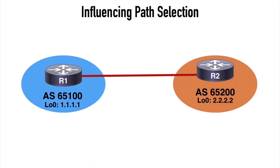There are some special cases where we may need to override certain BGP default behaviors, and we're going to look at some of the ways that we can do that. In this first topology we're using a couple of routers: R1 in Autonomous System 65100 and R2 in Autonomous System 65200. They're connected over a 10.1.1.0/24 network and advertising their respective loopback addresses — loopback 1.1.1.1 for router 1 and loopback 2.2.2.2 for router 2.